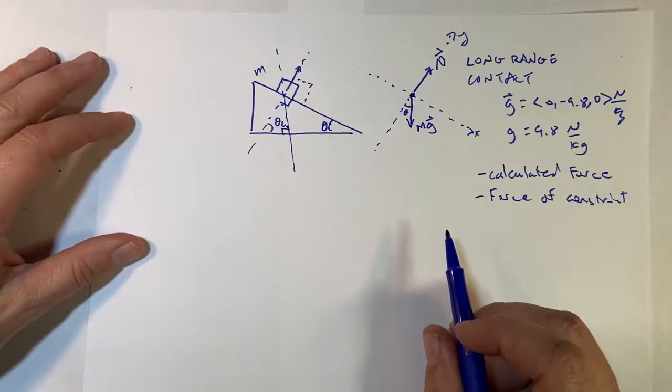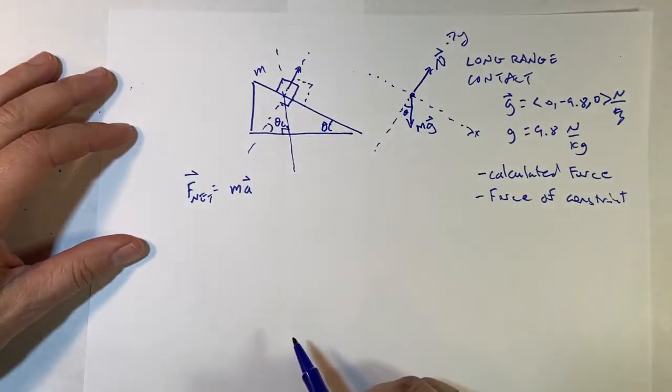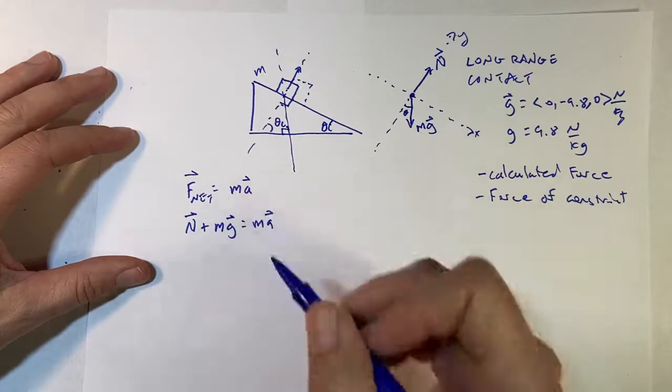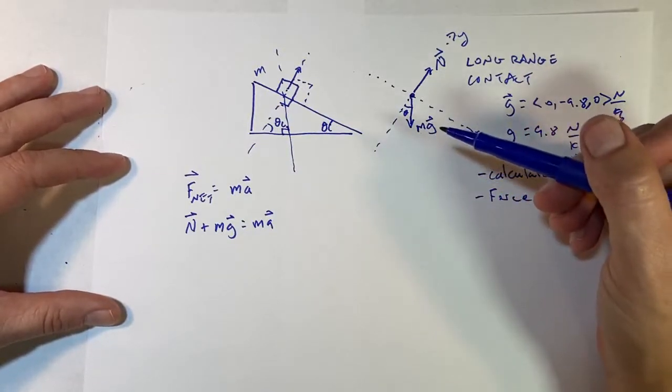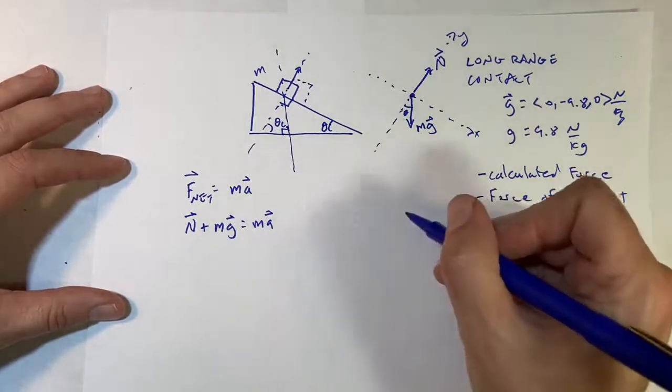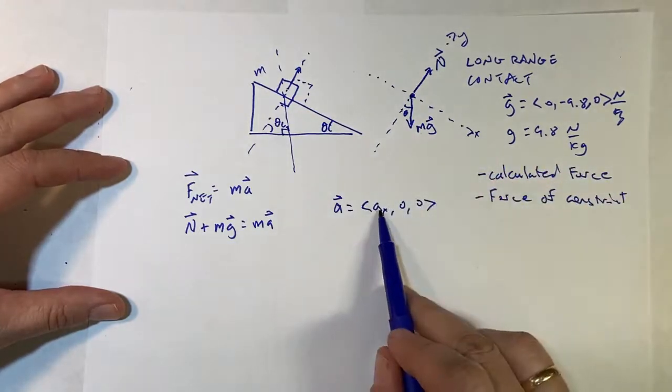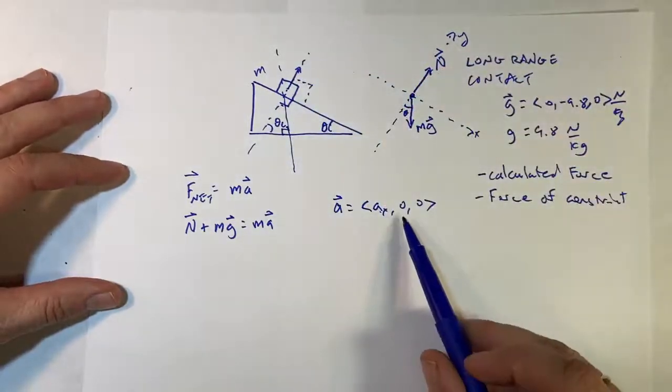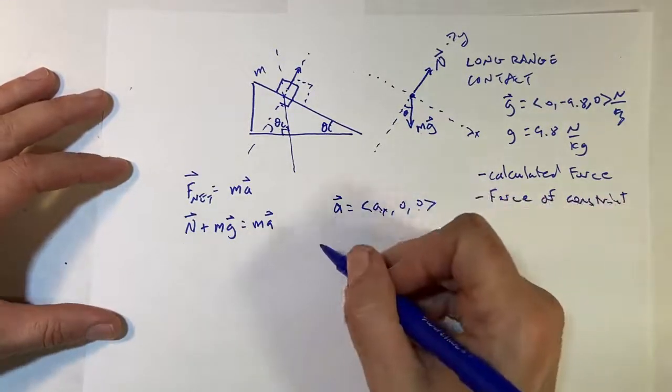So now let's write down our force equation. So this says F net equals MA. And so what forces do we have? We have N plus Mg equals MA. Yes. Plus. Remember, even though this is a force in the negative Y direction, it's still, we're adding the vectors. So now what do we know here? I know a couple of things. I know the vector for the acceleration. A equals AX zero zero. I know that the acceleration in the X direction is something, but it is not accelerating the Y direction because it's constrained to that plane. So that has to be zero and Z too. It's not moving in and out of the board. So what else do I know? I know G. I know Mg. So let's just write this.